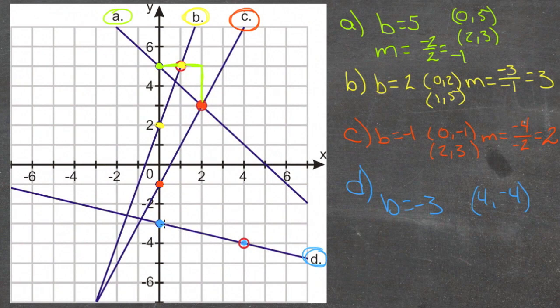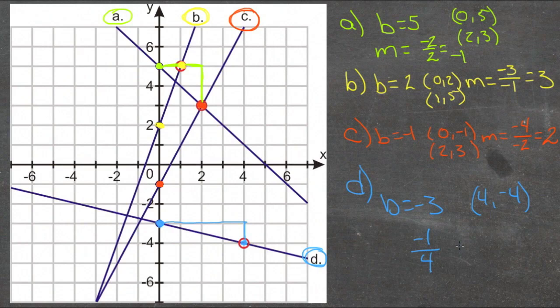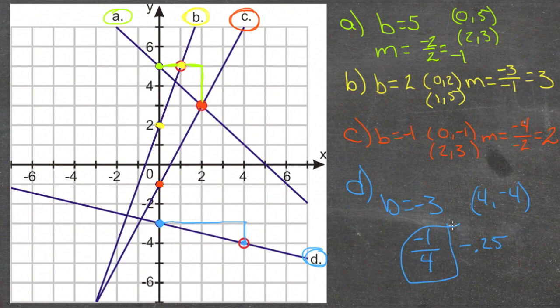And our rise over run is run 1, 2, 3, 4. Rise negative 1. So our slope is rise negative 1, run 4, or negative 0.25. Either negative 1 fourth or negative 0.25.